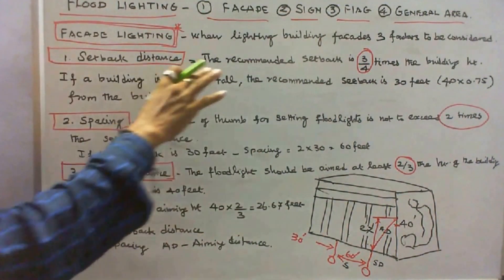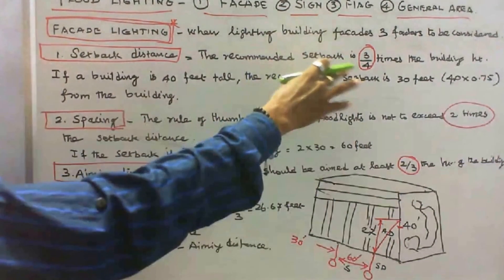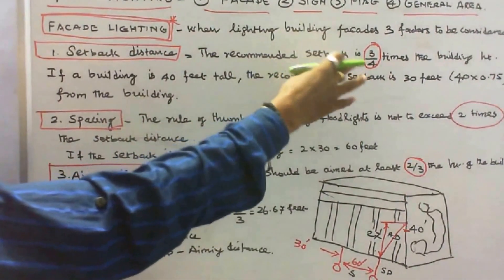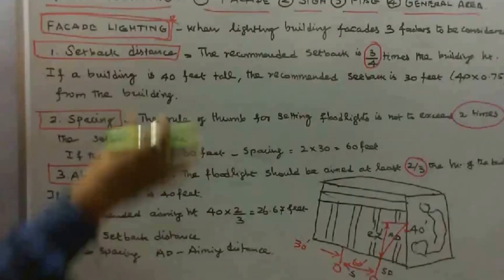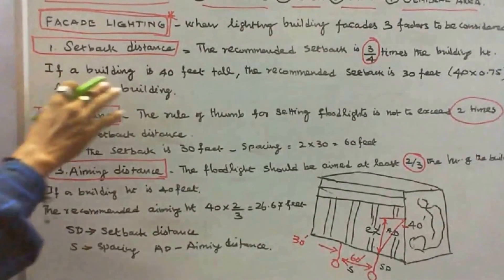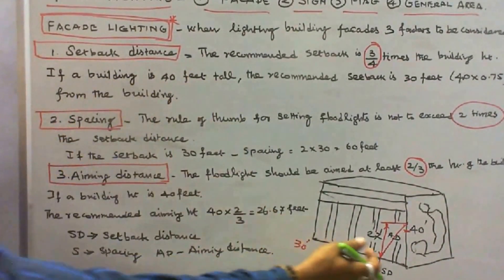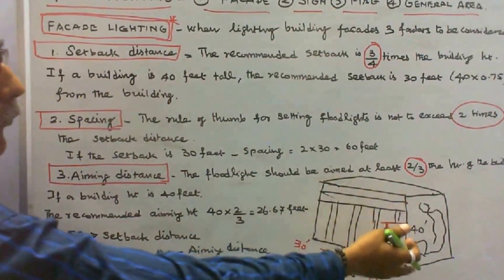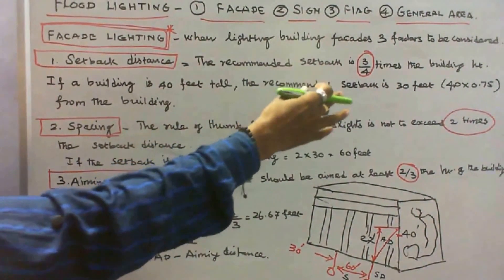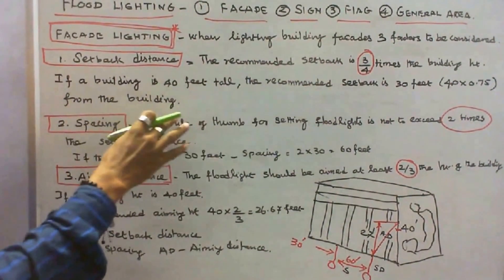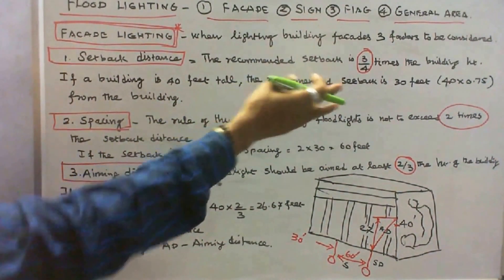The recommended setback is 0.75 times the building height, that is 3/4 times. If a building is 40 feet tall, the recommended setback is 30 feet from the building — that is 40 multiplied by 0.75.